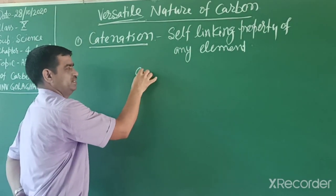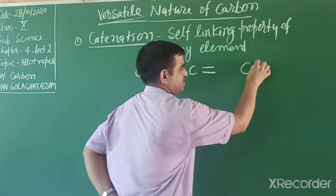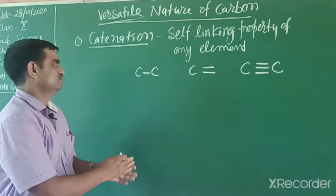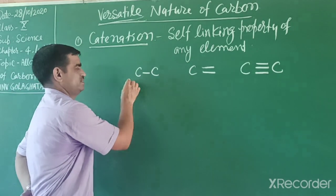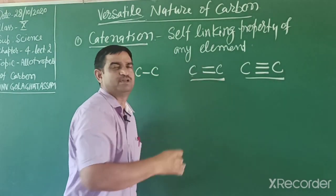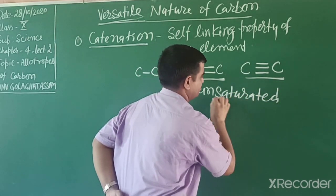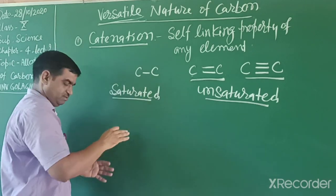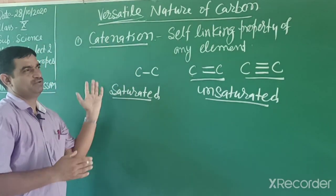This property of catenation is found highest in carbon. One carbon can attach to other carbons in a straight line, in a ring, or with double and triple bonds. When it makes single bonds, such compounds are known as saturated compounds. When it makes double or triple bonds between carbon-carbon, those are known as unsaturated compounds. Carbon can also make ring-type and branched side chain structures - due to this property, millions of types of compounds are formed.